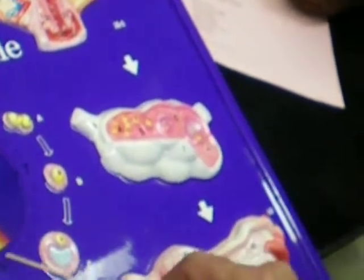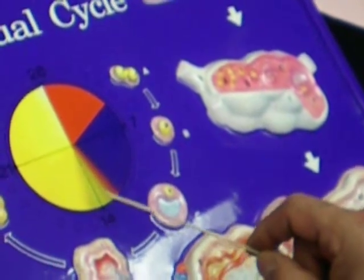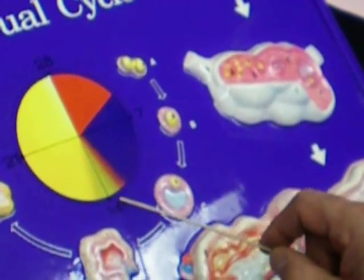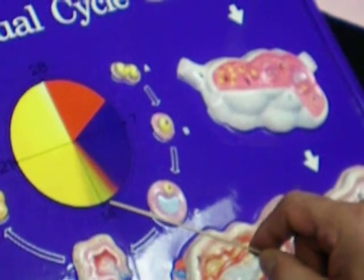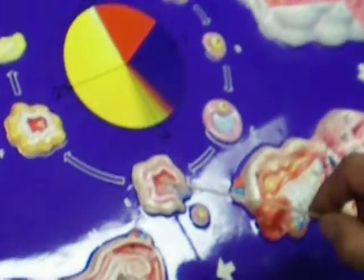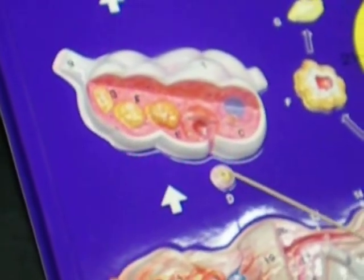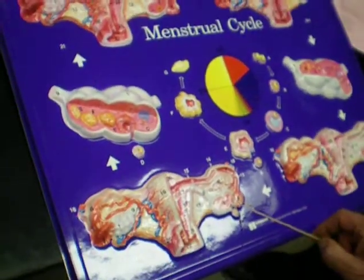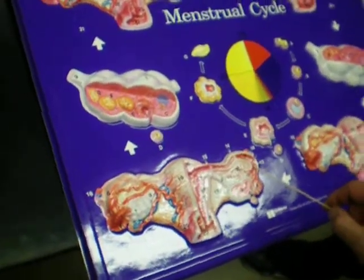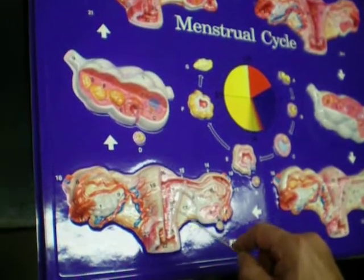At around day 14, the level of estrogen rises and LH is released from the anterior pituitary gland, causing this follicle to rupture. This is a ruptured follicle. The oocyte travels out and then into the fimbriae, the infundibulum, the ampulla, the isthmus, and the body of the uterus.